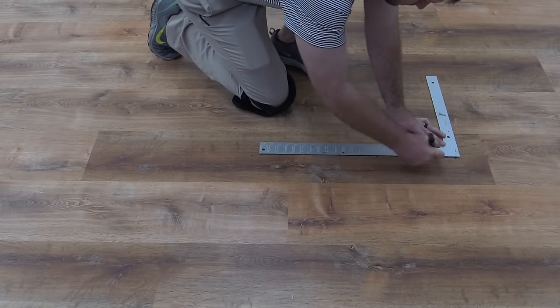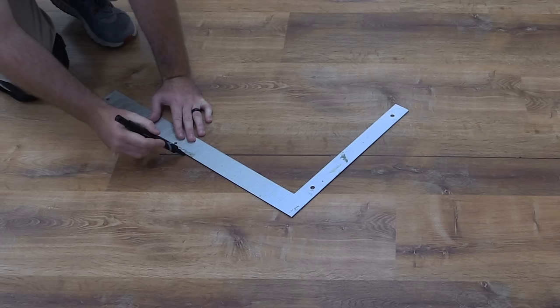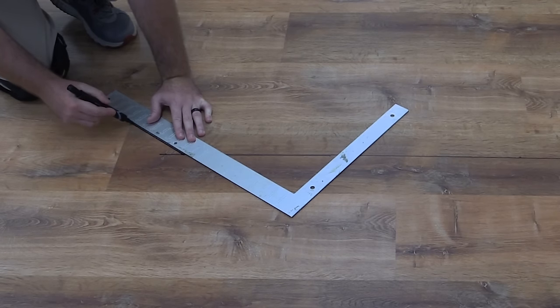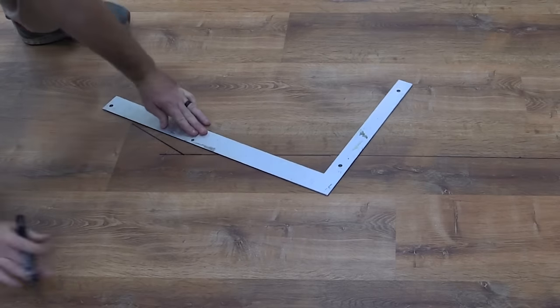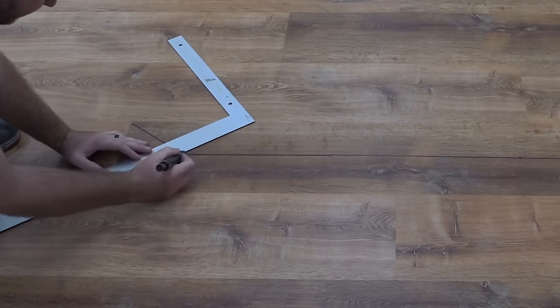Use a straight edge to draw a line down the center of the plank. Next, draw 45 degree angles from the corners to the center line to form a triangle at each end of the plank.